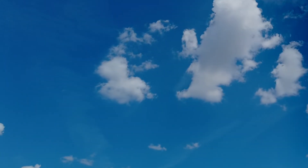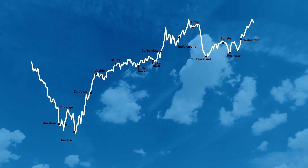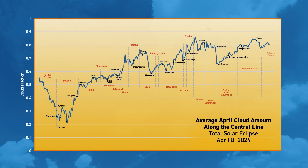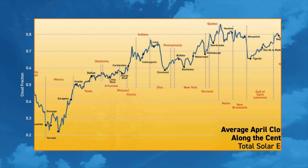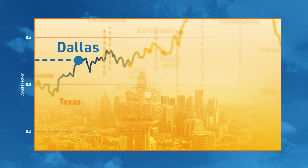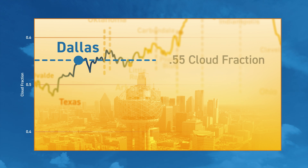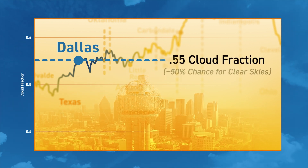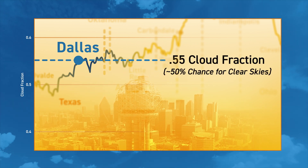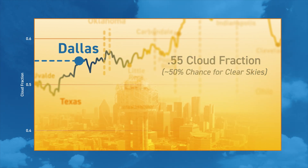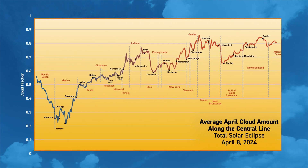To see the eclipse, we must also have cloud-free skies that day. Looking at weather data covering many years, this chart shows the predictions for if the sky will be clear. You can see Dallas about a quarter of the way into the chart, and if you look across, you'll see it is at about 0.55 cloud fraction. This means there is about a 50% chance of clear sky that day from our location. Notice it gets worse as you head further east.